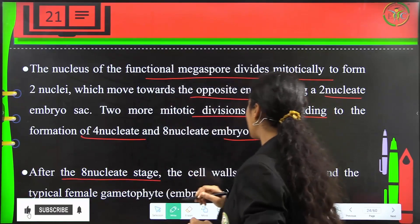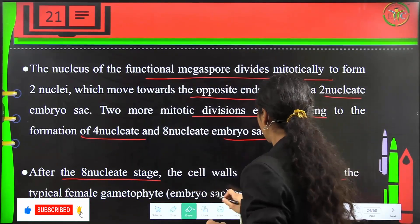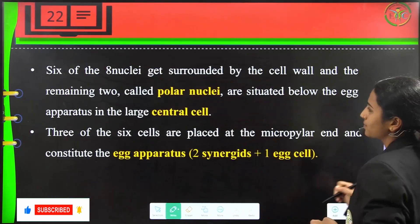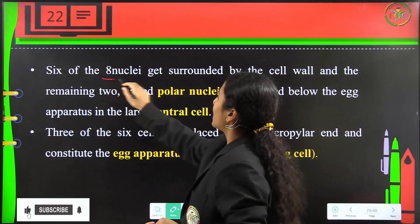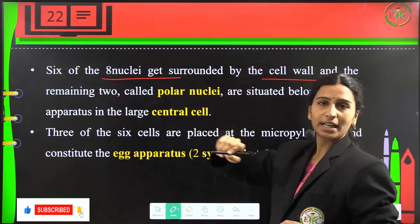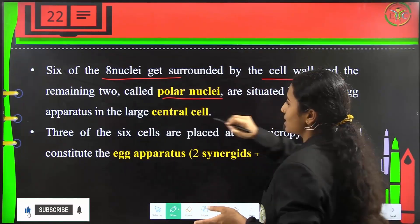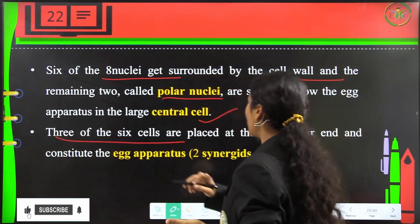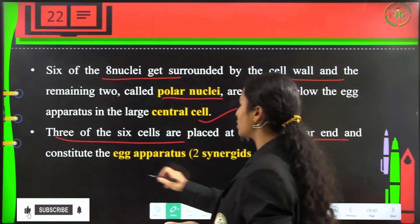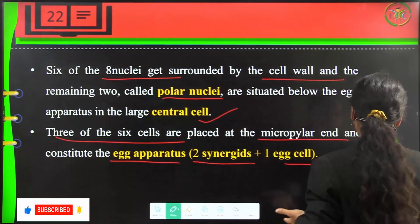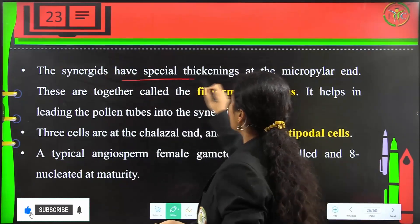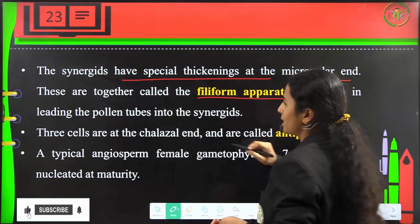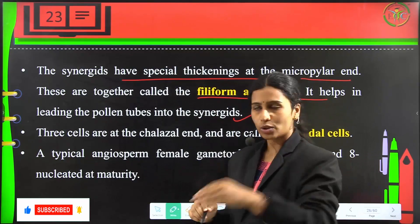After the eight-nucleate stage, cell walls are laid and the typical female gametophyte gets organized. Six of the eight nuclei get surrounded by cell walls and the remaining two remain as polar nuclei, situated at the large central cell. Three of the six are placed at the micropylar end and constitute the egg apparatus, consisting of two synergids plus one egg cell. Synergists have special thickenings called the filiform apparatus, which help lead the pollen tube into the synergids.